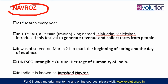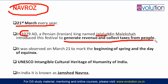Our next topic is the festival of Navroz, celebrated on 21st March every year. Its origin dates to 1079 AD when a Persian king — Jaloudin Malekshah — introduced this festival to generate revenue and collect taxes from the people. That is how Navroz was started. During medieval times, during the Sultanate or Mughal period, people from Persia came to India, and that is how the Navroz festival was celebrated in India.